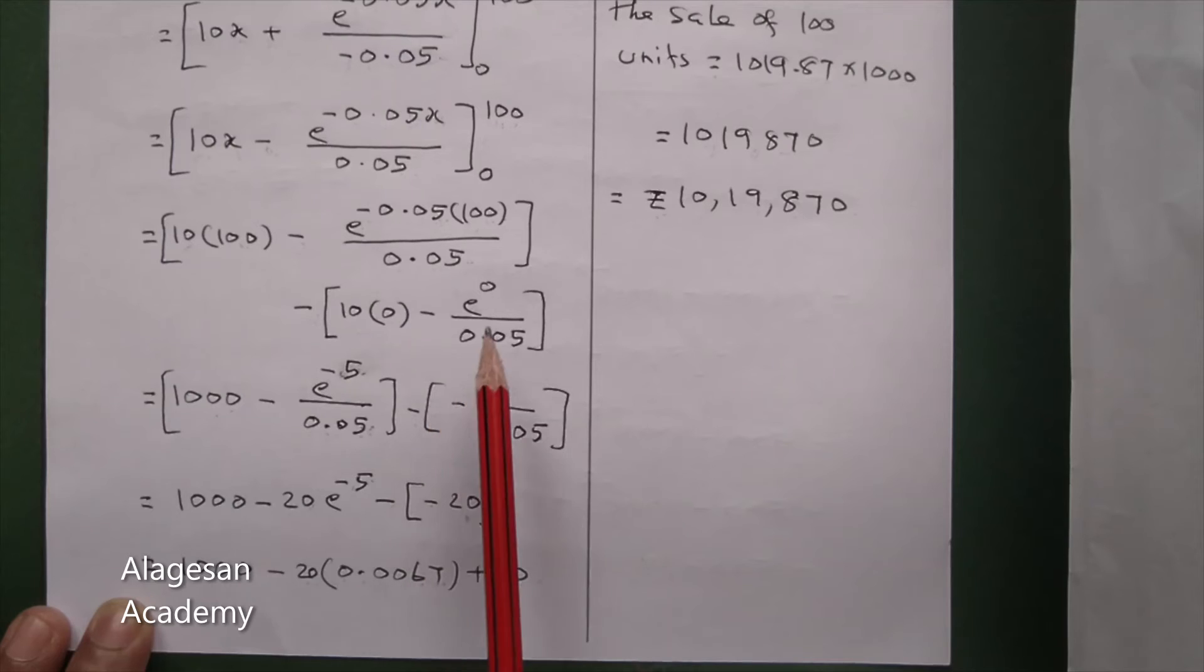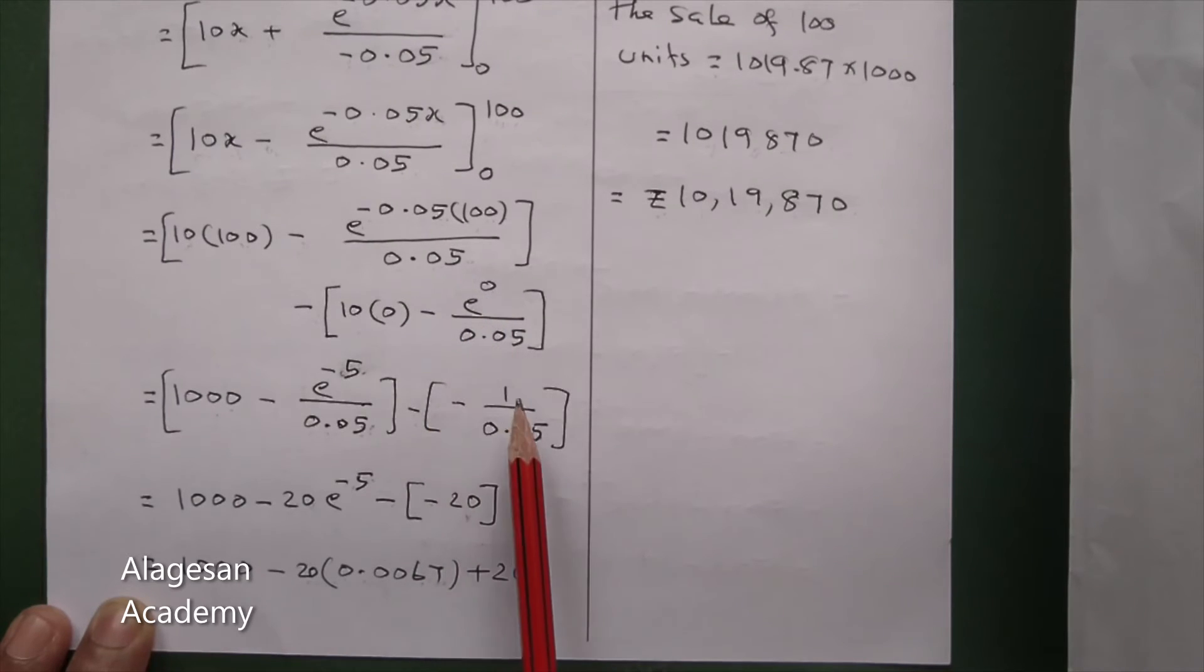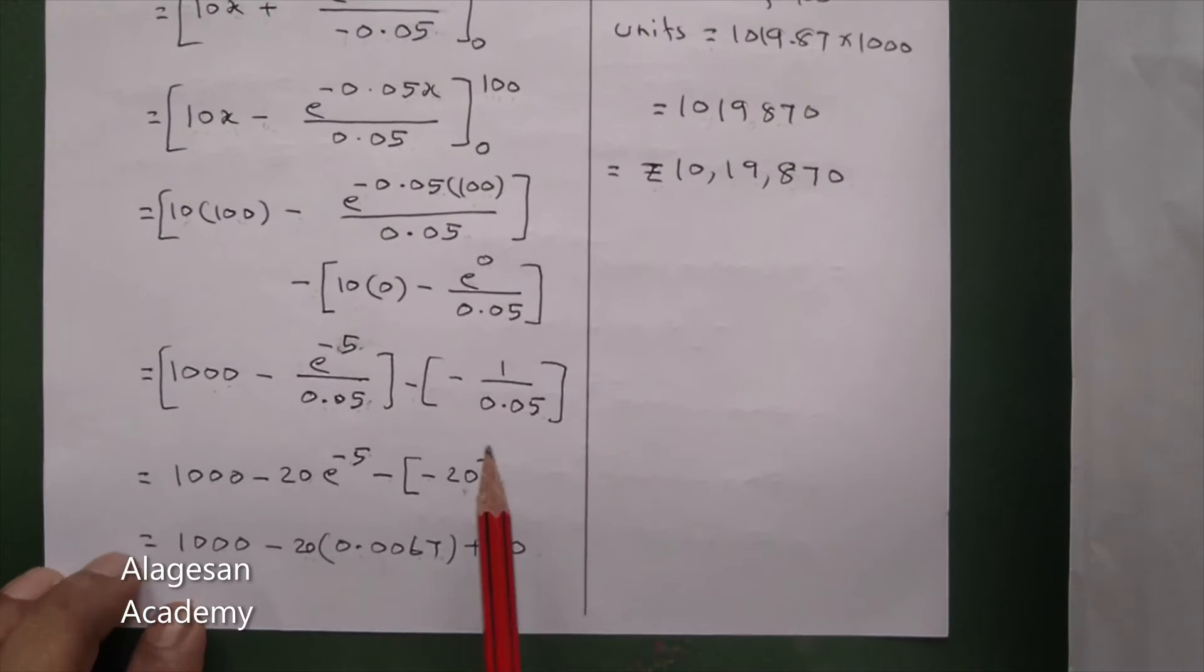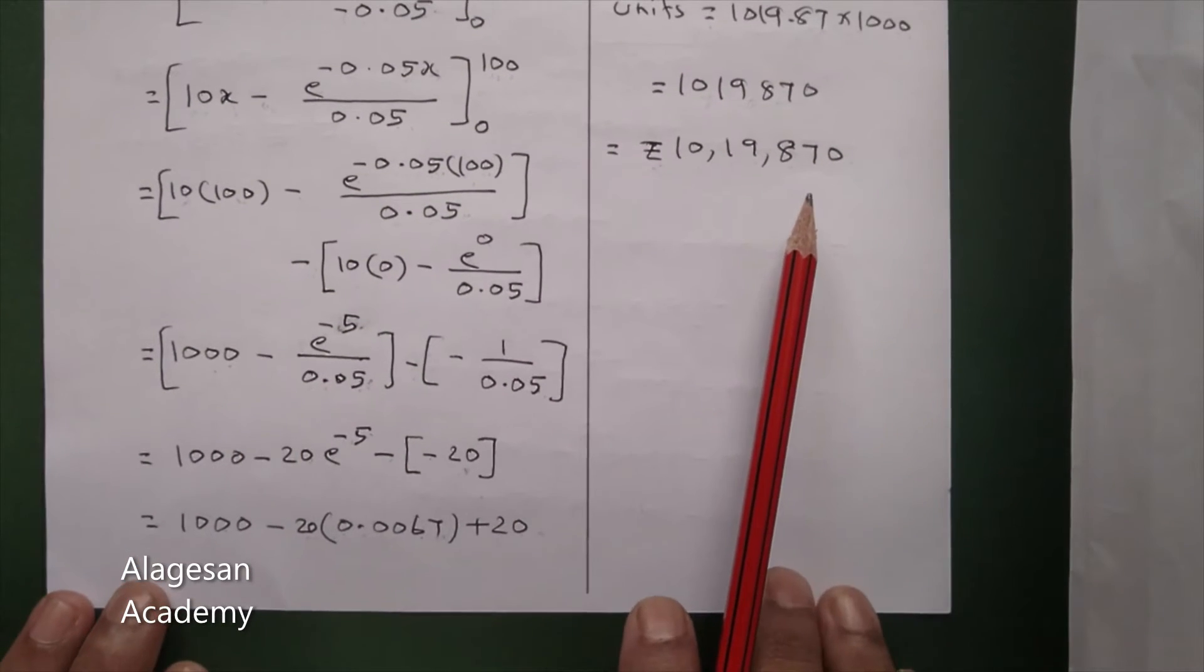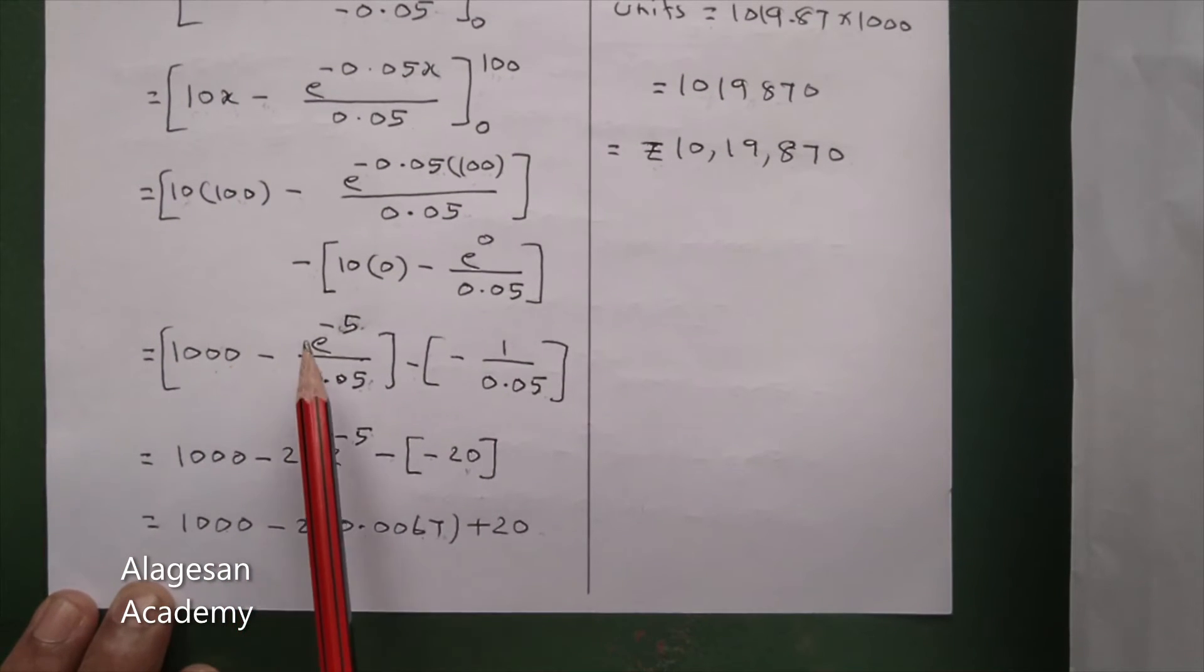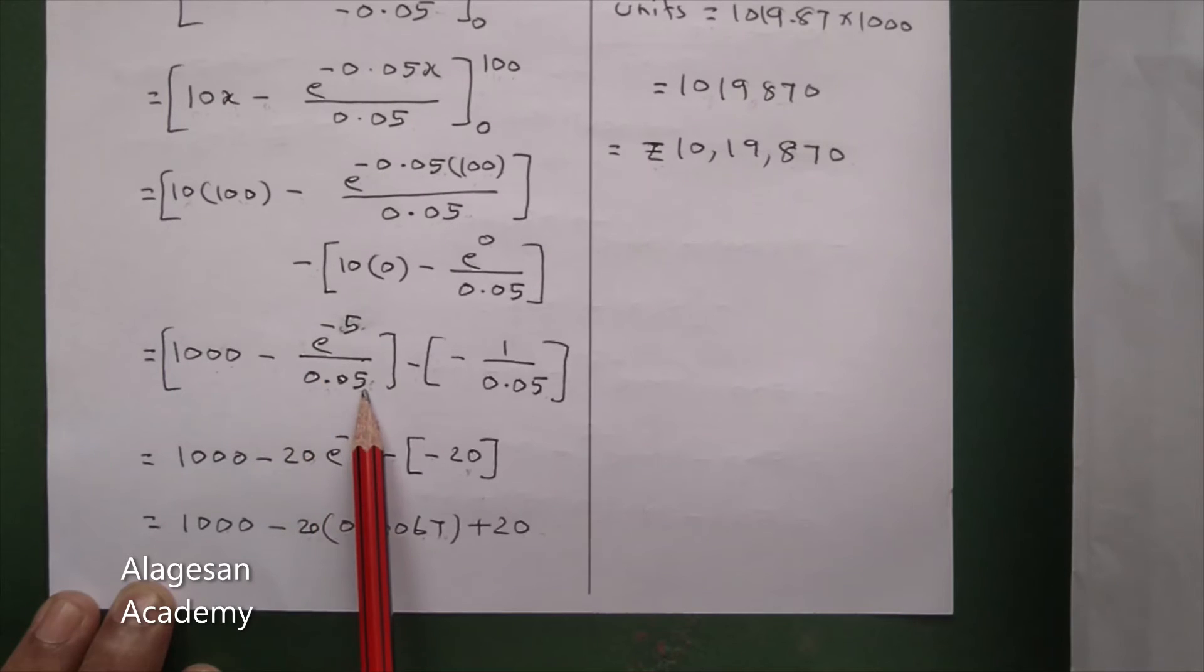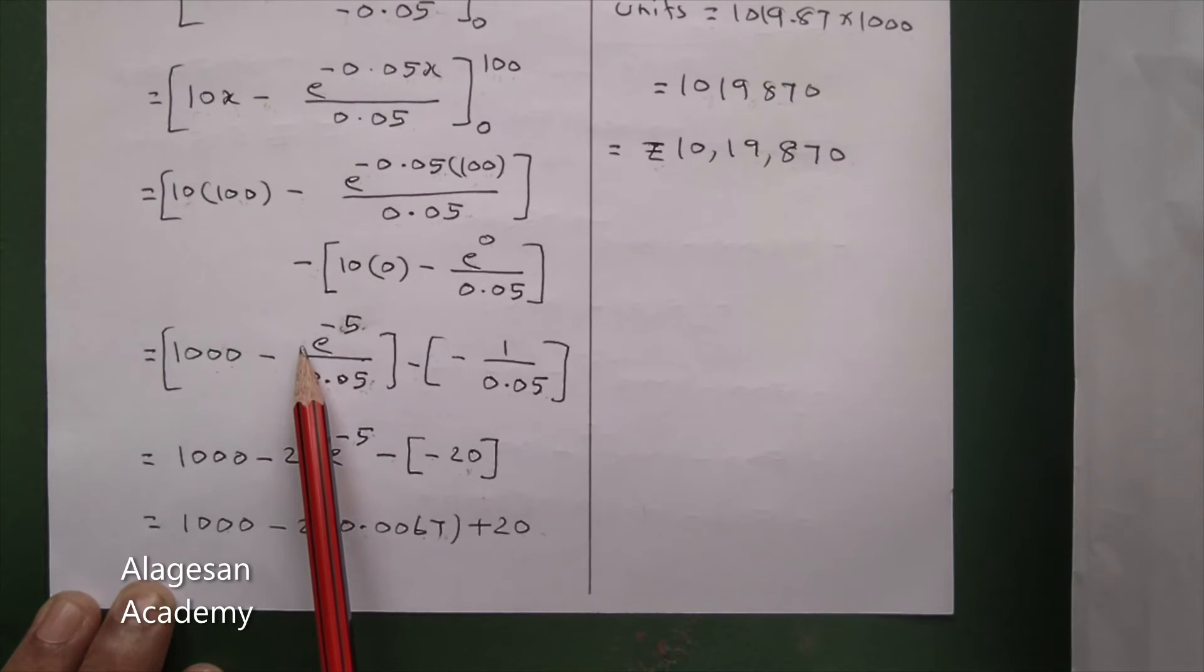0 times anything is 0. E power 0 is equal to 1, so 1 by 0.05. Next, 1000 minus 1 by 0.05. Use a calculator for e power minus 5 minus 1 by 0.05.